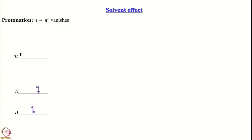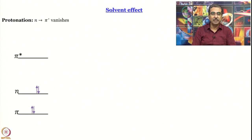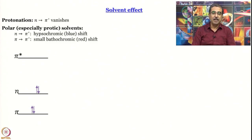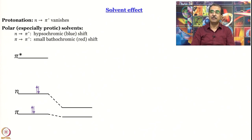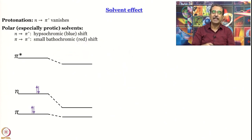What happens if you add acid? The lone pairs get engaged with the proton, so the n→π* transition would gradually vanish with increasing acid — finally disappearing. For polar solvents, n→π* transitions show a blue shift or hypsochromic shift (to higher energies), while π→π* transitions show a small bathochromic or red shift. This is because polar solvents stabilize the energy levels to different extents: the n level is stabilized to a much greater extent than the π level, since non-bonding electron pairs are more strongly directed and easier for the solvent to interact with.